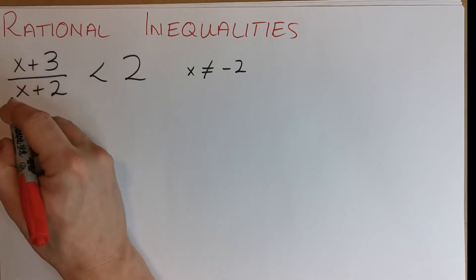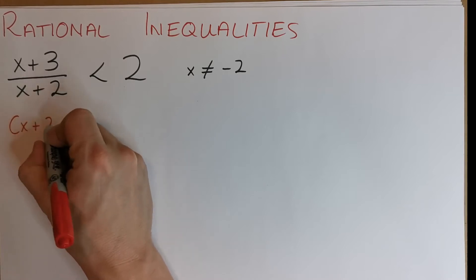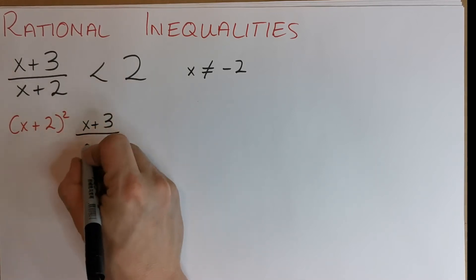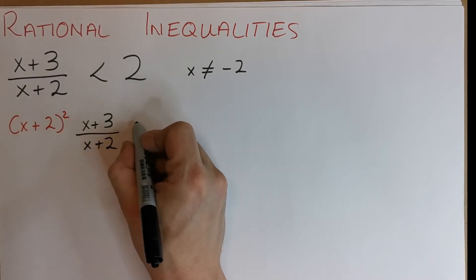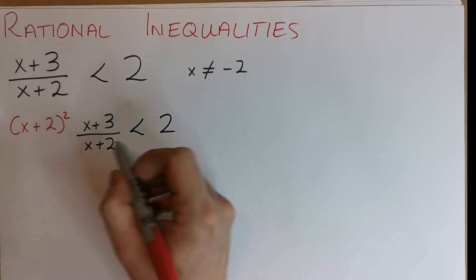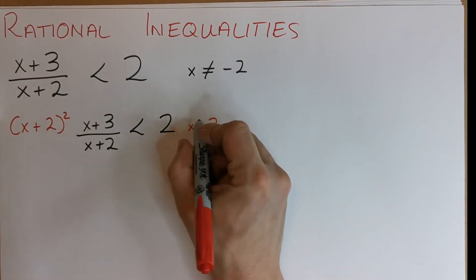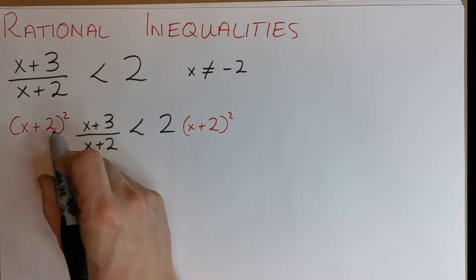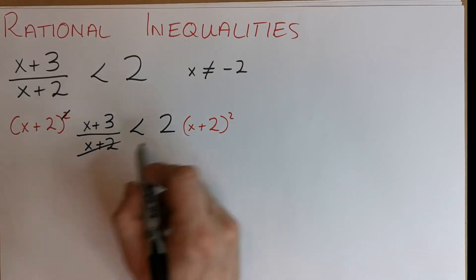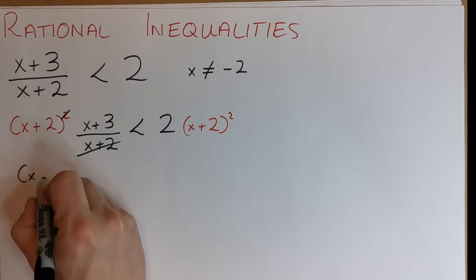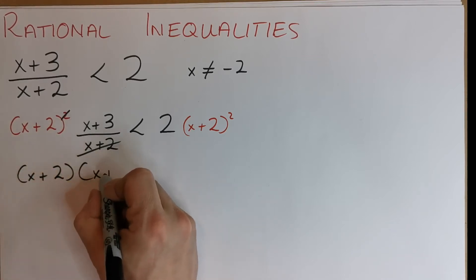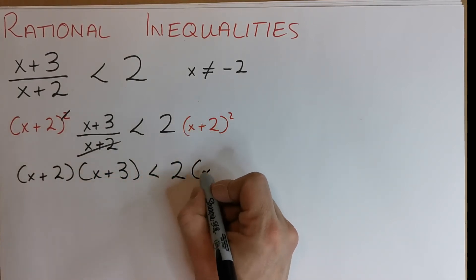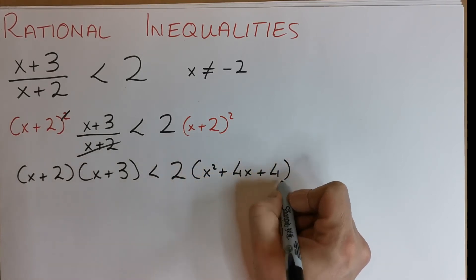So what we're going to do is multiply both sides by x plus 2 squared. The reason why is when we multiply by something squared, anything squared is definitely going to be positive if it's a real number, so we don't affect our inequality sign. Now x plus 2 squared is x plus 2 times x plus 2. One of these will cancel with the denominator. We now have x plus 2 by x plus 3 less than 2 times x squared plus 4x plus 4.